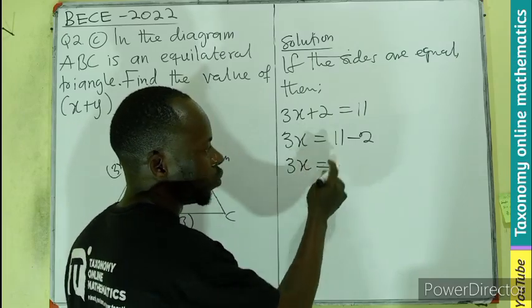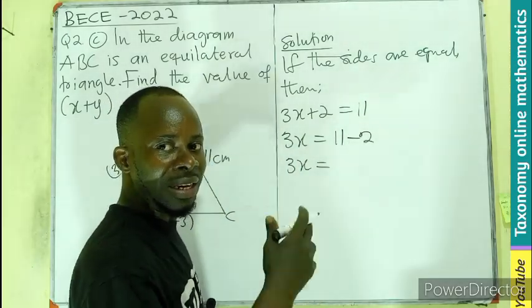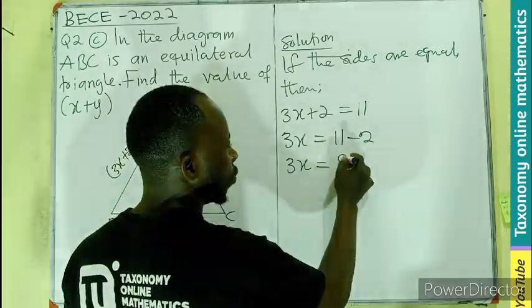That gives you 3X equals to 11 minus 2. And 3X will be equal to, if you take away 1, we are left with 10. Take away 1, we are left with 9.